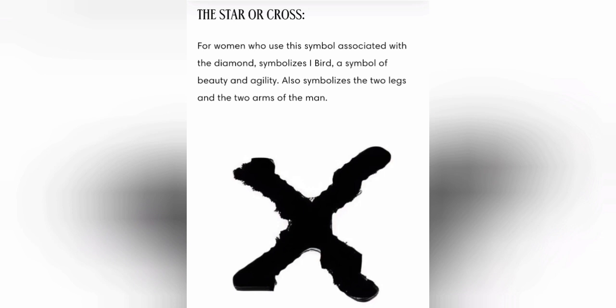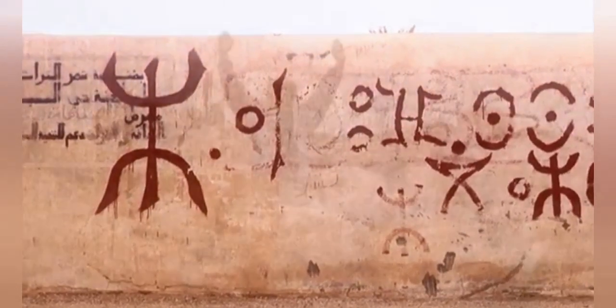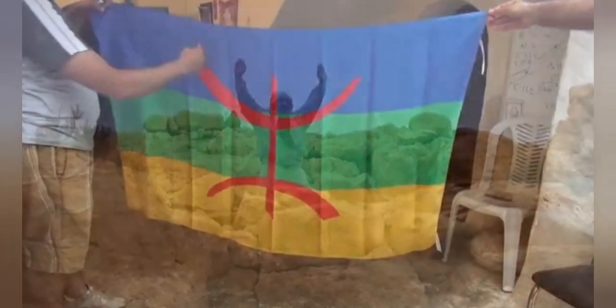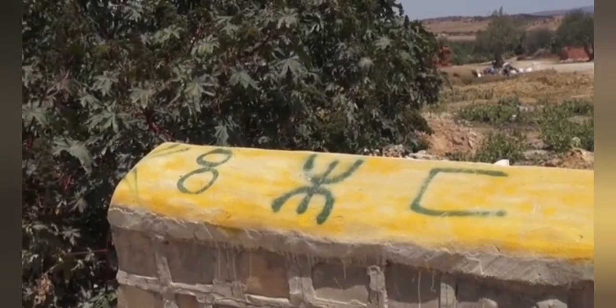Now that I've established a trend, let's go to the cross. We read that for women who use the symbol associated with the diamond, it symbolizes the bird — a symbol of beauty and agility. The symbol also symbolizes the two legs and the two arms of a man. The Amazigh alphabet is full of symbolic meaning, and Ajisul defines one of the most famous and recognizable letters. If you see this symbol painted, you know you are in Amazigh-friendly territory.